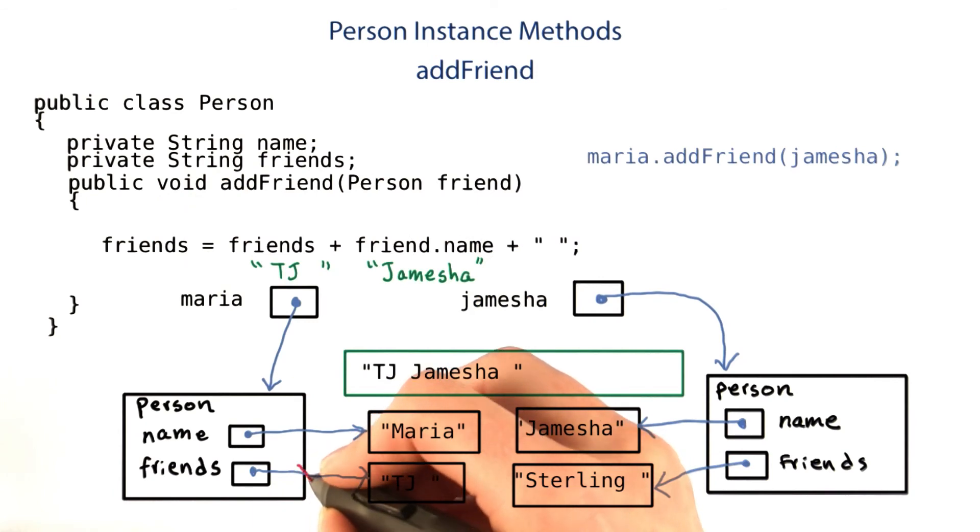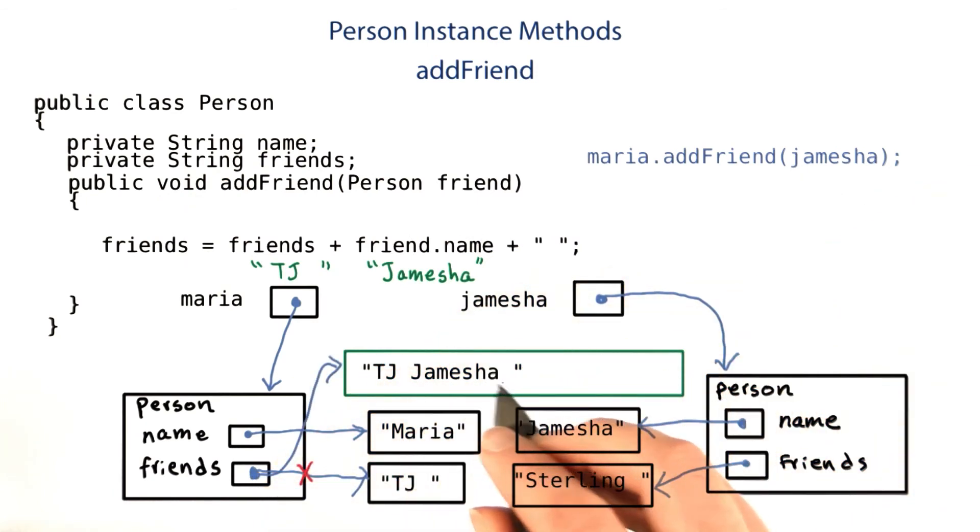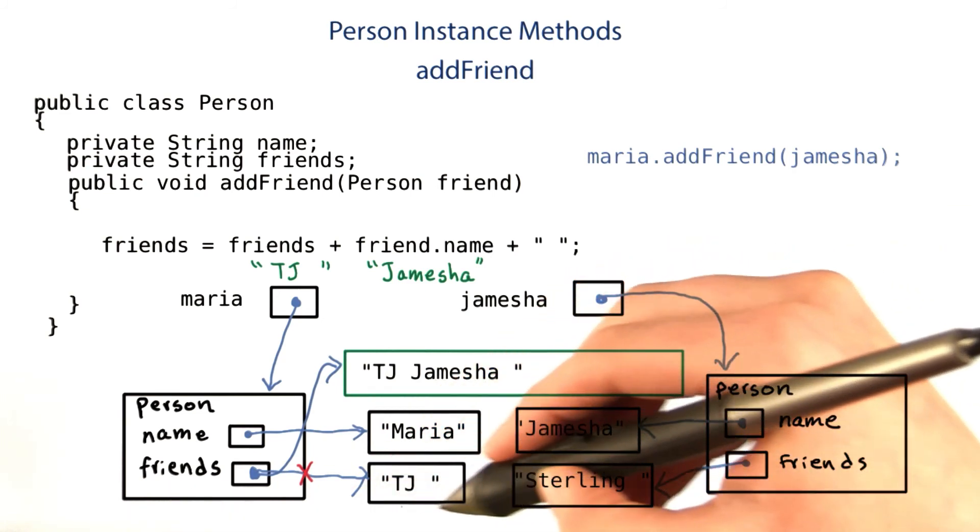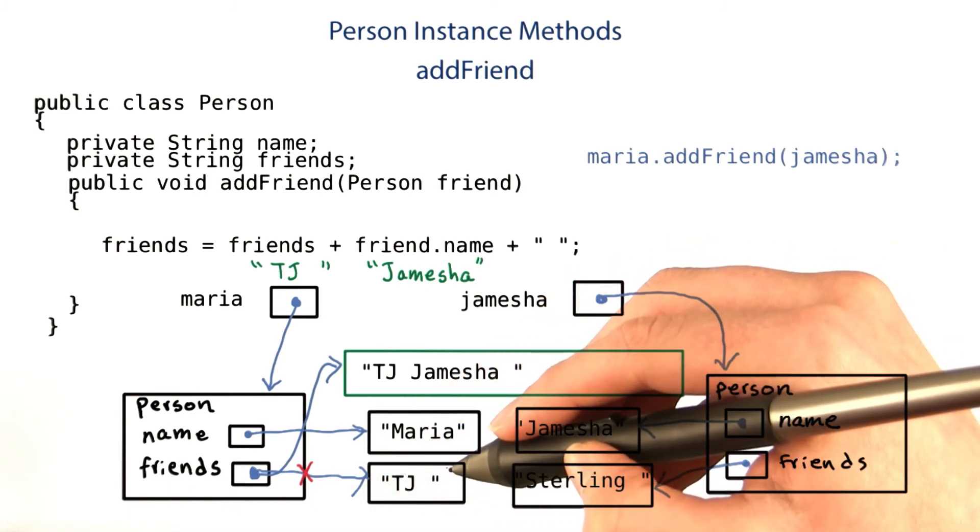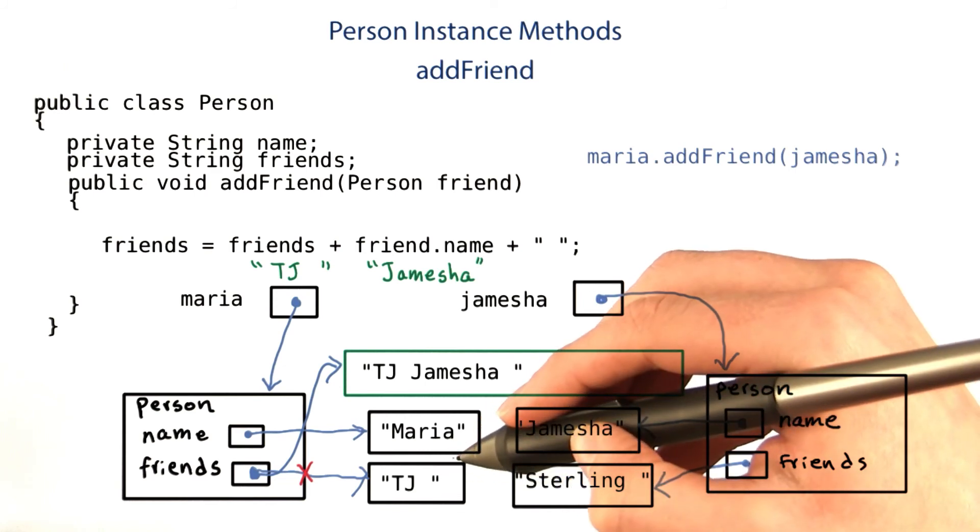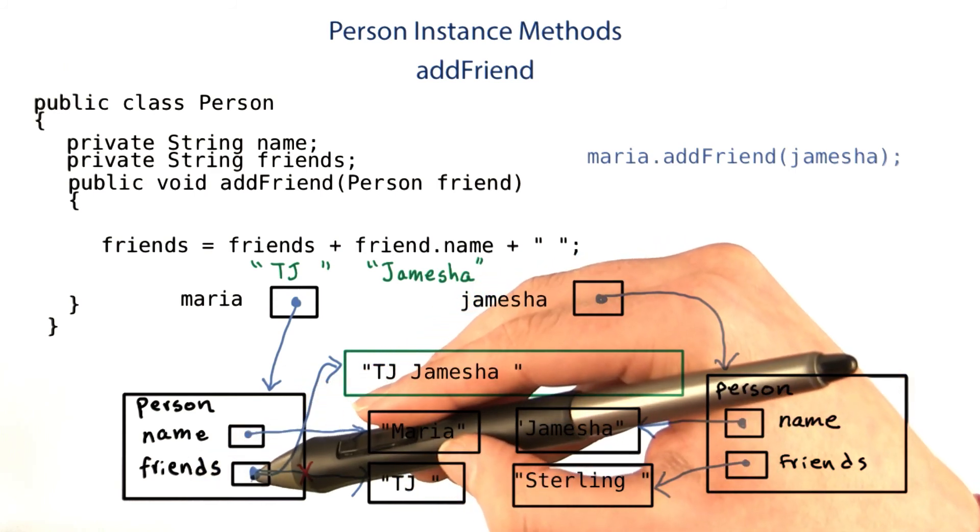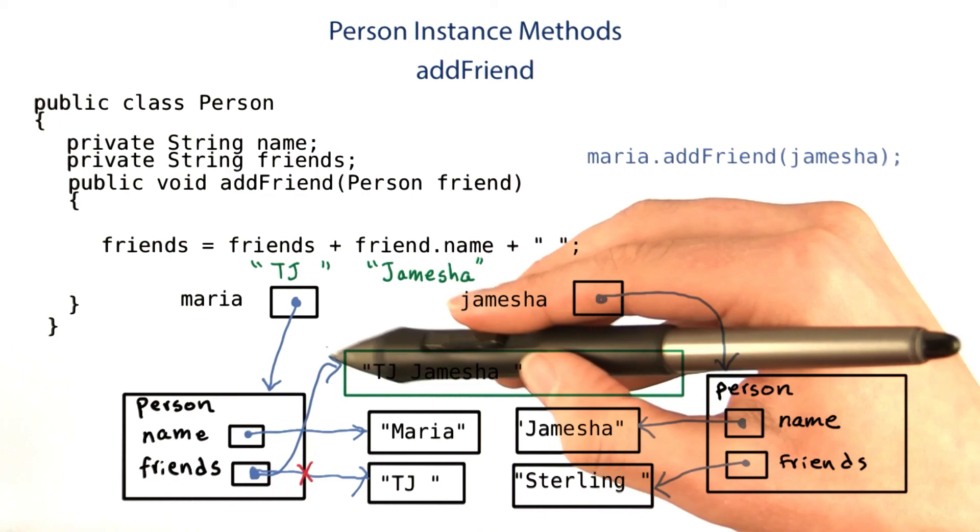So the old reference will go away, and a new one will be created. And now, Jameesha appears in the friends of Maria. The old friends string that contained just TJ might still be around, and it hasn't changed. But the friends variable in the Maria object now contains a reference to a different string.